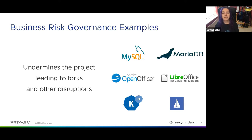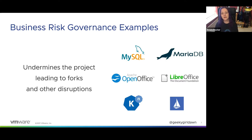Governance issues caused by corporate ownership of open source projects can undermine a project's success and lead to disruptions. In some cases, these disruptions make it difficult to make progress, but they can also result in the project forking and becoming two completely separate projects. Forking a project can be extremely time-consuming — it slows down progress and increases business risk for companies using or contributing to the project. When a project forks, you need to decide whether to continue with the original project or embrace the fork, which is a gamble since it can take months or years to see which project will eventually prevail.